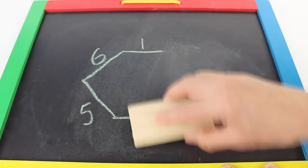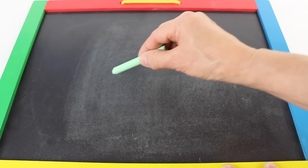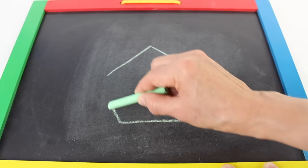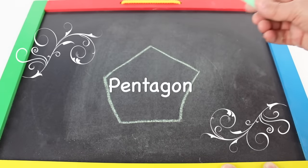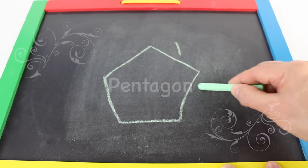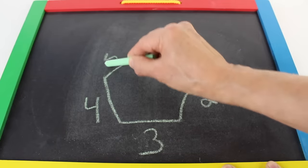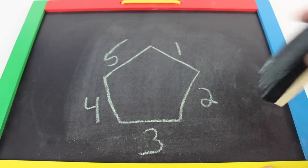Let's draw a pentagon. Let's erase that. Let's draw a pentagon. One. Two. Three. Four. Five. A pentagon has five sides. One. Two. Three. Four. Five. Let's erase that.